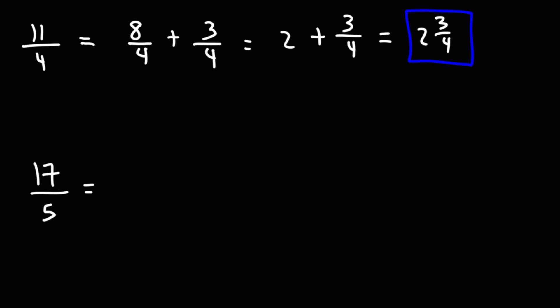Now, what about 17 over 5? We could break down 17 into 15 plus 2. The denominator must be the same. So 15 over 5 plus 2 over 5 is 17 over 5.